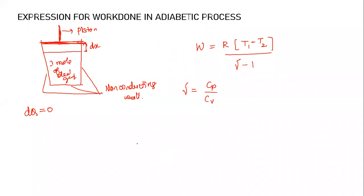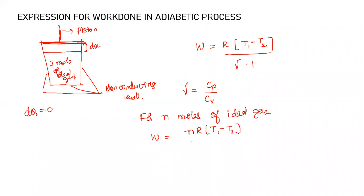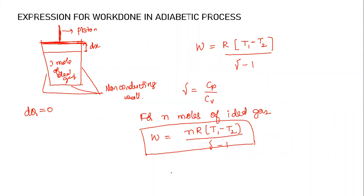For n moles of ideal gas, the work done in an adiabatic process is W equal to nR(T1 − T2) divided by (γ − 1). This is the relation for work done in an adiabatic process. You can refer to the derivation in your book. We will complete here — thank you so much.